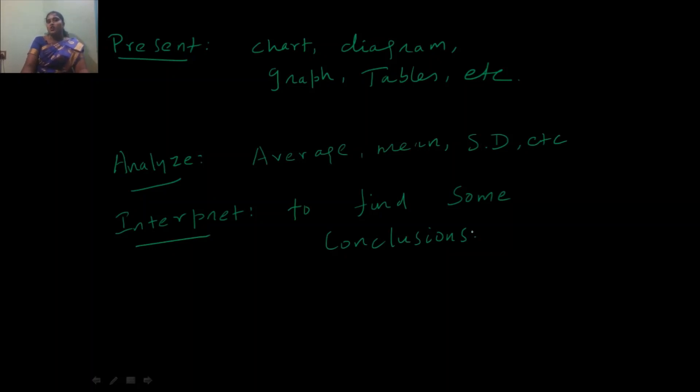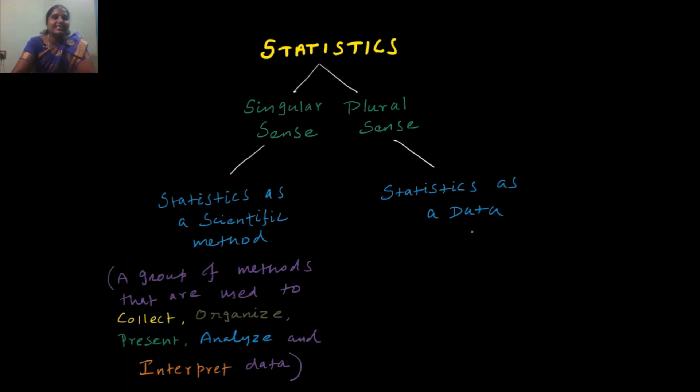With this introduction, hope you got an idea about statistic as a singular sense. Let us again come back to the definition of statistic. So statistic has been defined both in singular and in plural sense. As a singular sense, statistic means statistic as a scientific method. And as a plural sense, statistic means statistic as data. With this short introduction, hope you got an idea about the meaning of statistics. Thanks for watching. See you again in my next video.